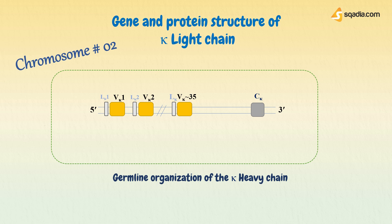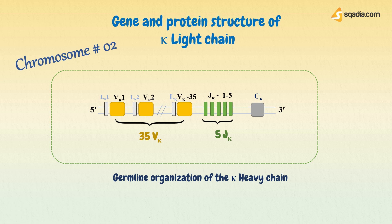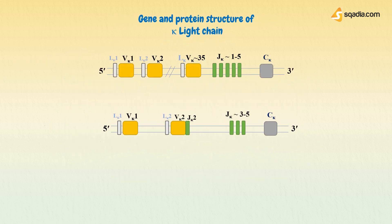The part closest to the constant region is coded for by a separate gene segment called the J gene, or J kappa. J stands for joining, because the J segment joins the V and C segments. Note that in light chains, the D segment is absent. There are approximately 35 V kappa genes and 5 J kappa genes, and each of these gene segments has different nucleotide sequences.